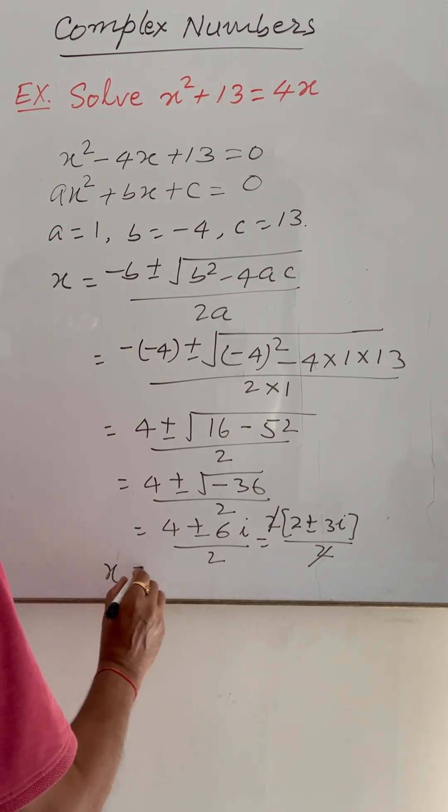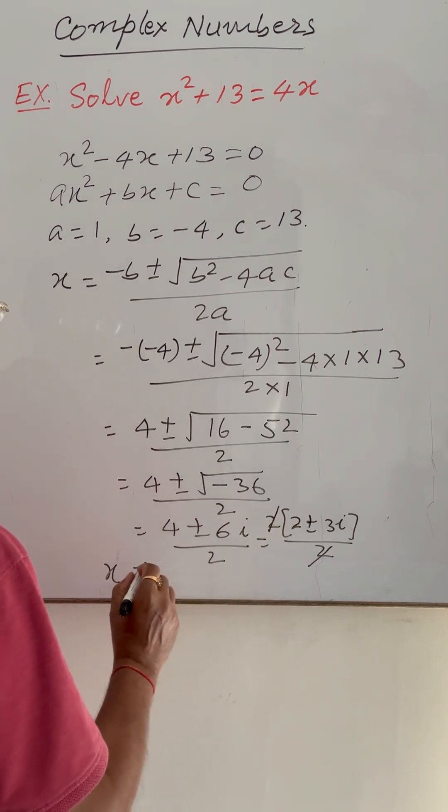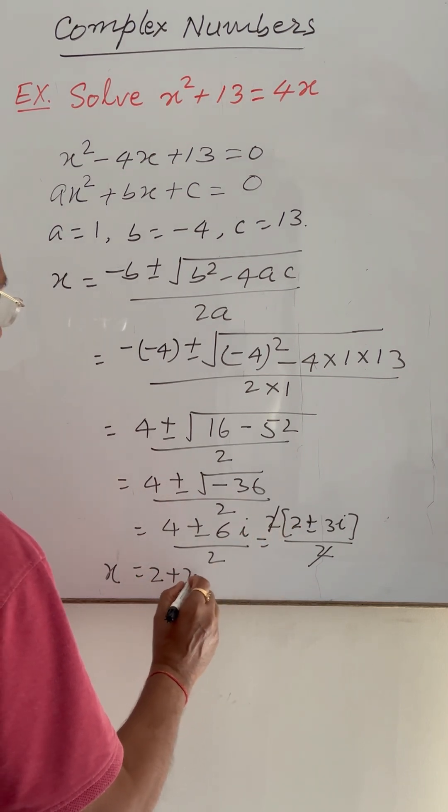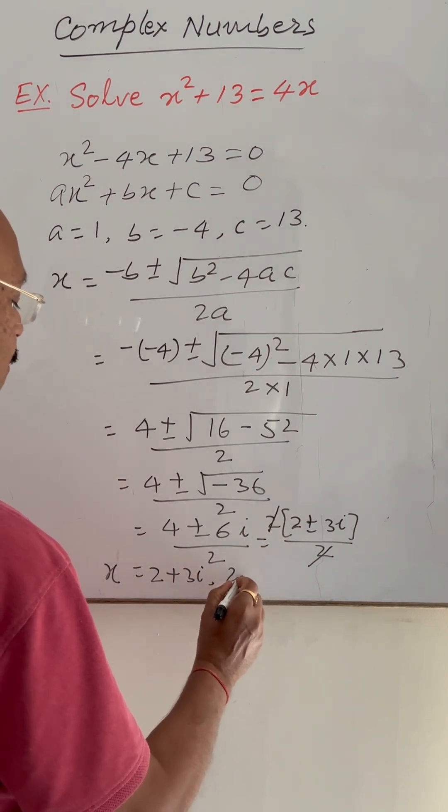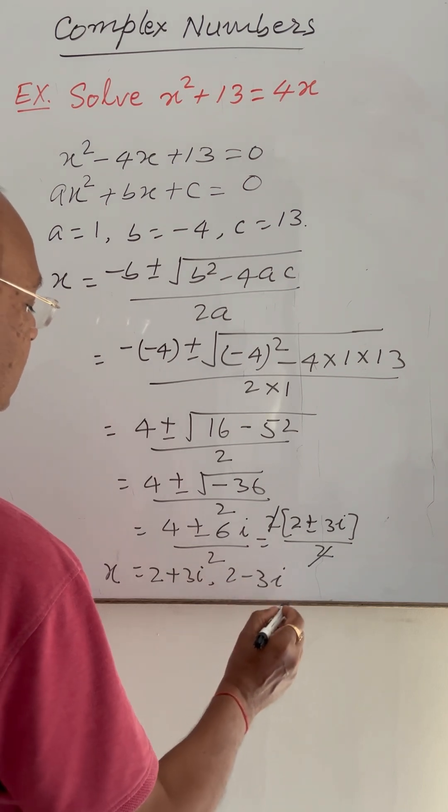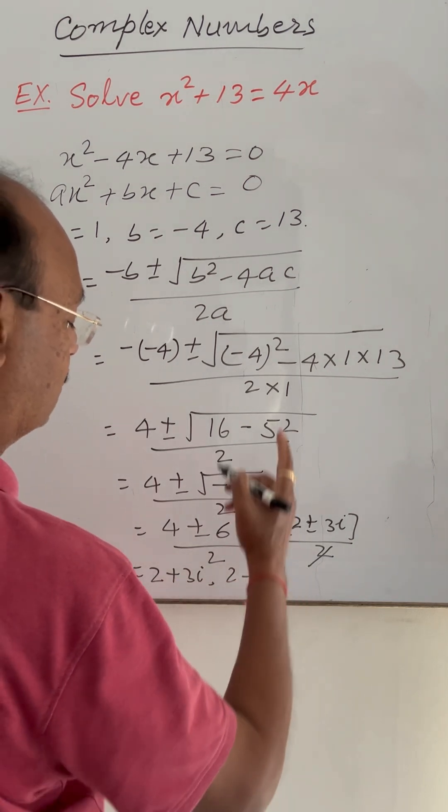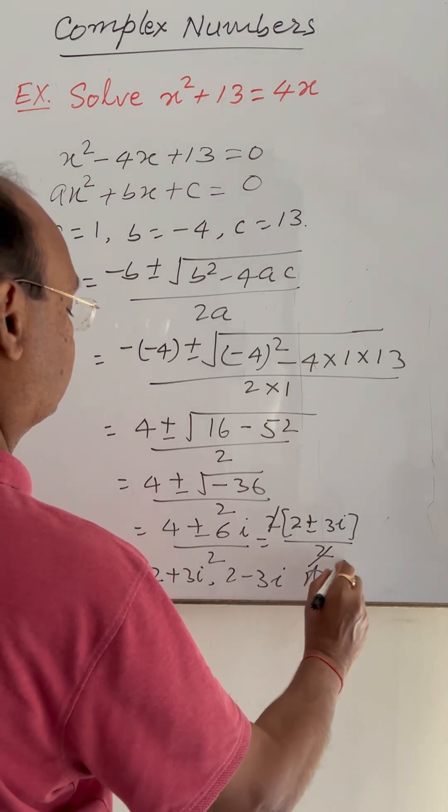So x is equal to 2 plus 3i and 2 minus 3i. This is the set of solutions of this quadratic equation. This is the answer.